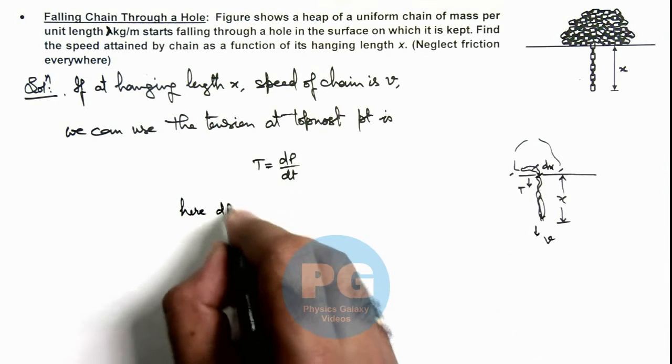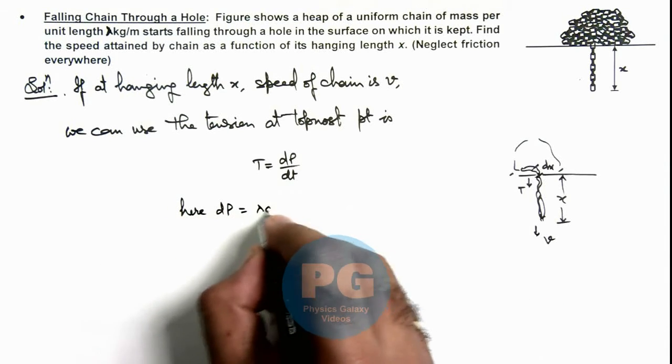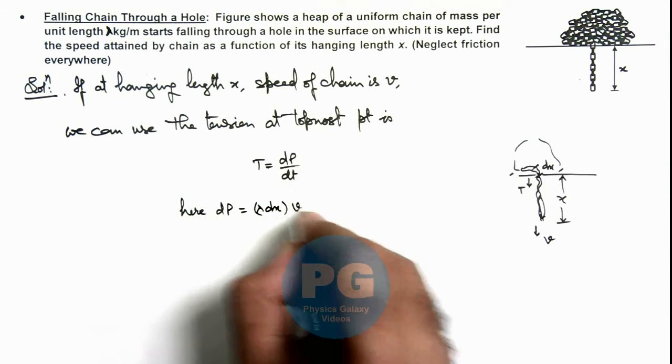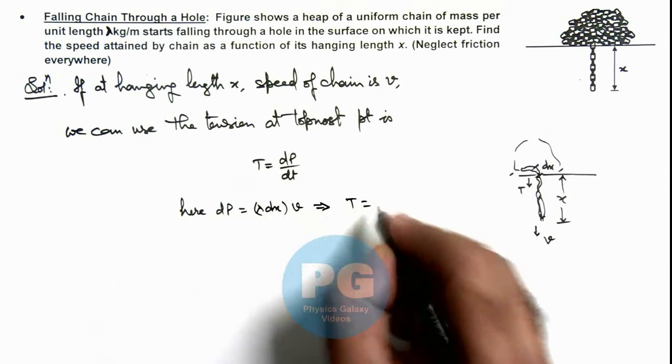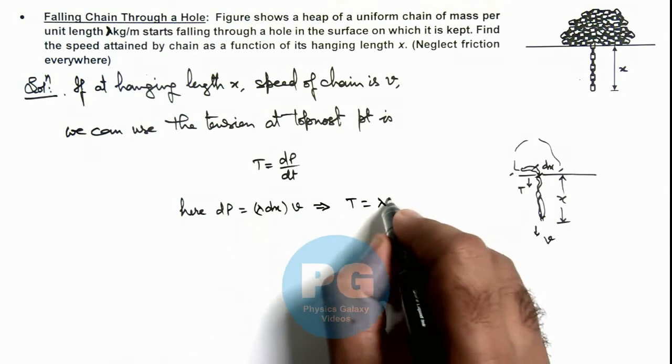We can write dp equals lambda dx multiplied by v. This implies the tension will be dp/dt, which can be written as lambda v squared.